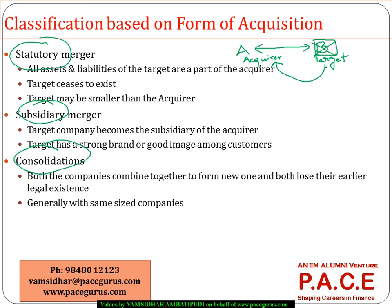In most cases the target is smaller than the acquirer, but in some cases we find the target is bigger than the acquirer — something like a reverse merger. The basic aspect in a statutory merger is that the target company will cease to exist, and it is only the acquiring company that would exist legally.